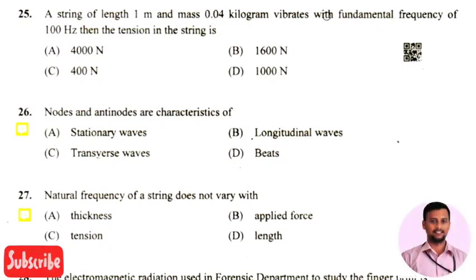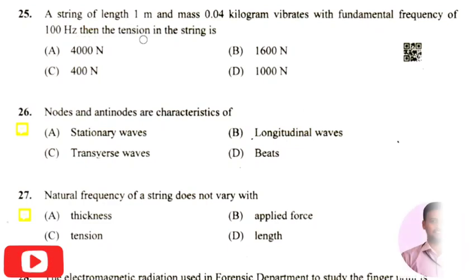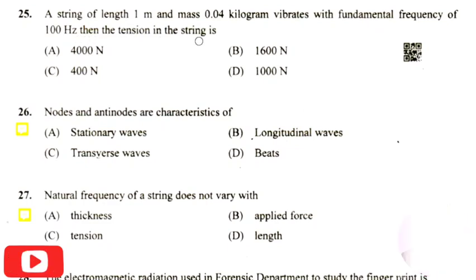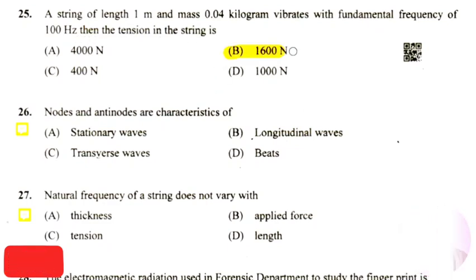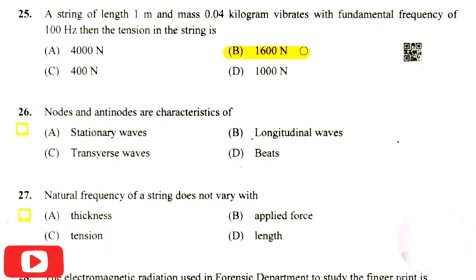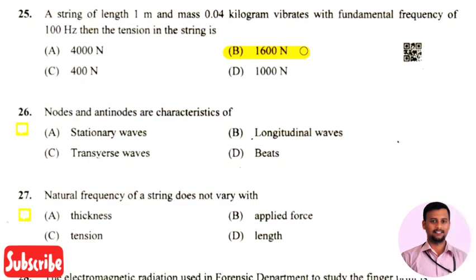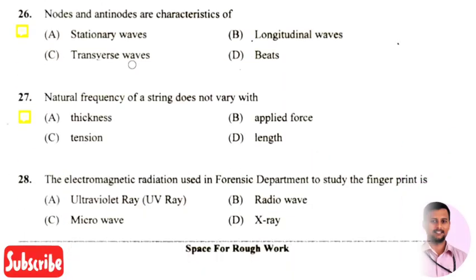The next question is: a string of length one metre and mass 0.04 kilogram vibrates with a fundamental frequency of 100 hertz — then the tension in the string is the right answer is option two, that is 1600 newtons. So the tension in the string will be 1600 newtons.